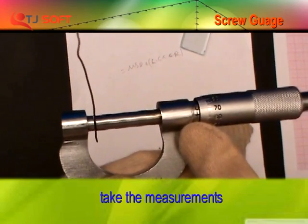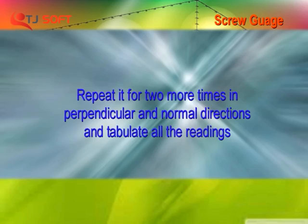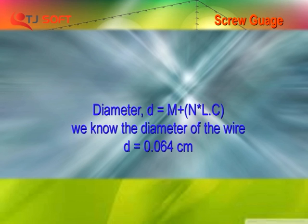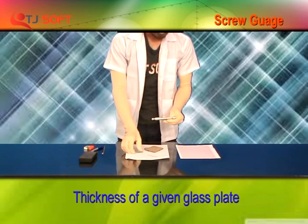Take main scale reading M, circular scale reading and repeat it for two more times in perpendicular and normal directions and tablet all the readings. By using diameter D is equal to M plus N into LC, we can know the diameter of wire.